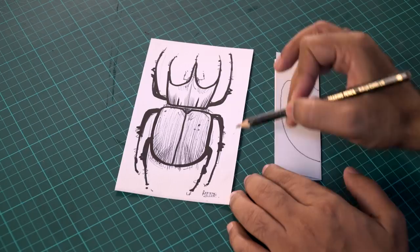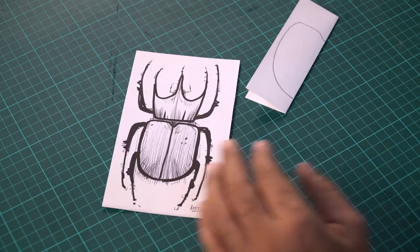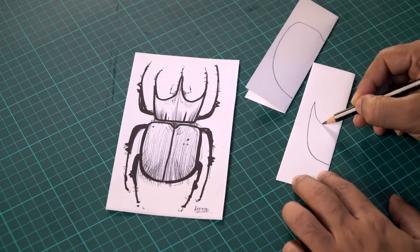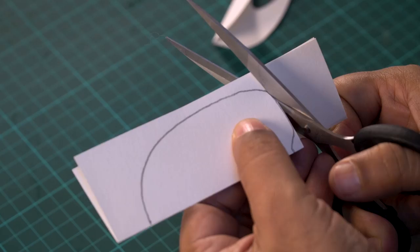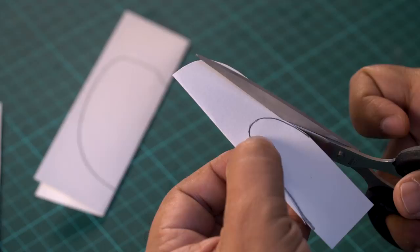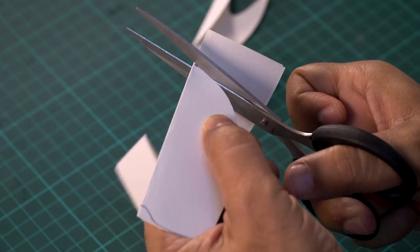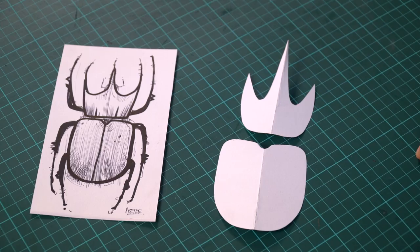Now we'll do the same thing for the head. Another sheet of paper. Let's fold this in half. And I'll draw half of the head again. Now I'm going to cut this out cleanly. So there you go. You can see, we have the body and the head.